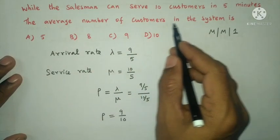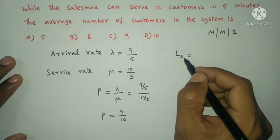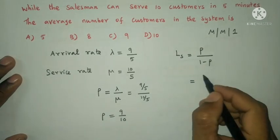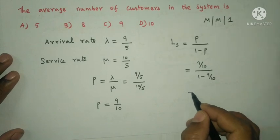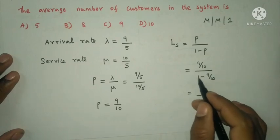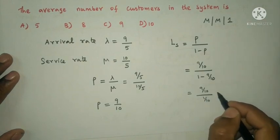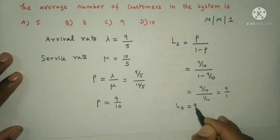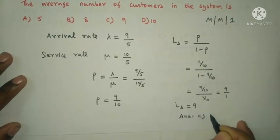The average number of customers in the system, Ls, is given by the formula: Ls = rho divided by (1 minus rho). With rho equal to 9 by 10: Ls = (9/10) divided by (1 minus 9/10) = (9/10) divided by (1/10) = 9. Therefore the average number of customers in the system is 9. The answer is option C.